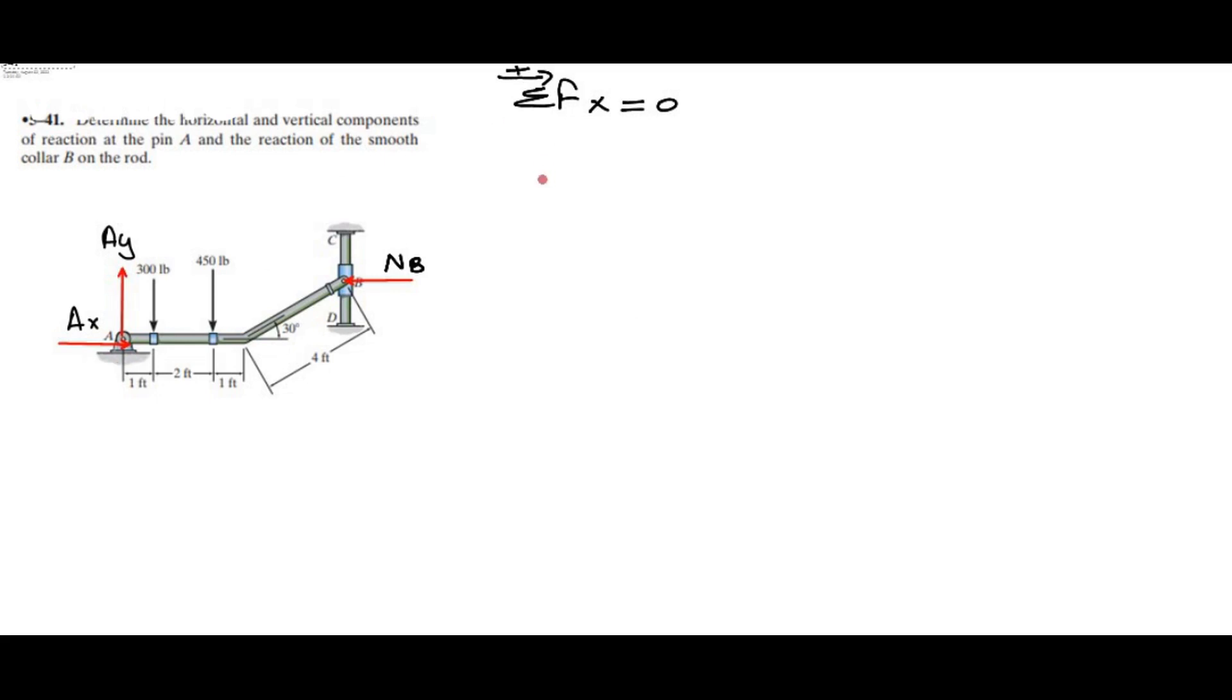So I have AX minus NB equals to 0. I have AX equals to NB. Let's call this equation 1.